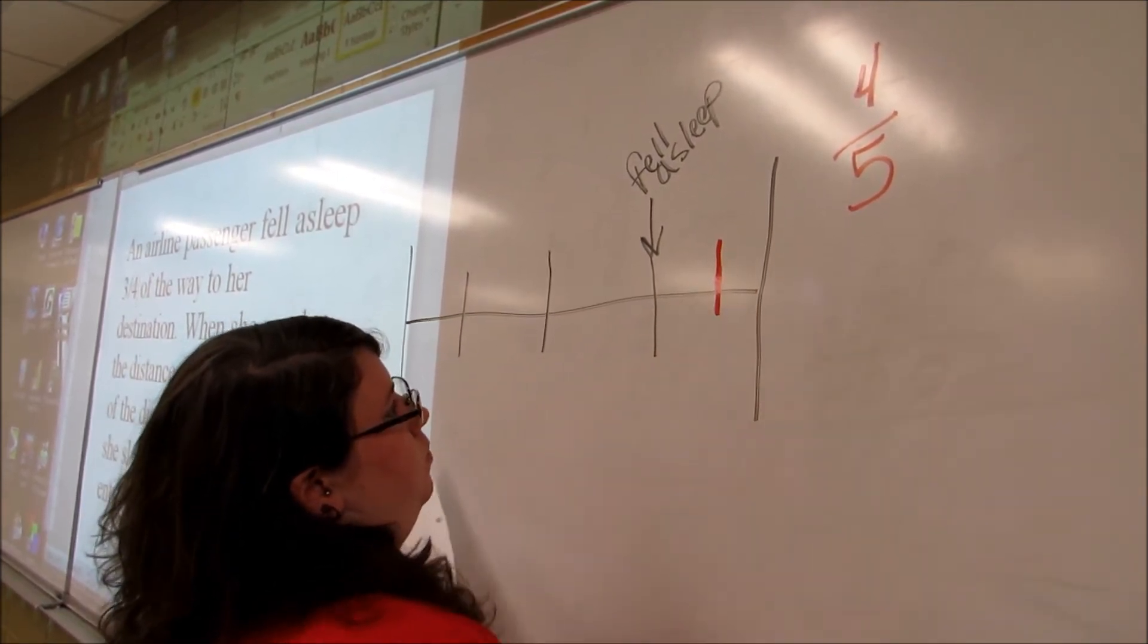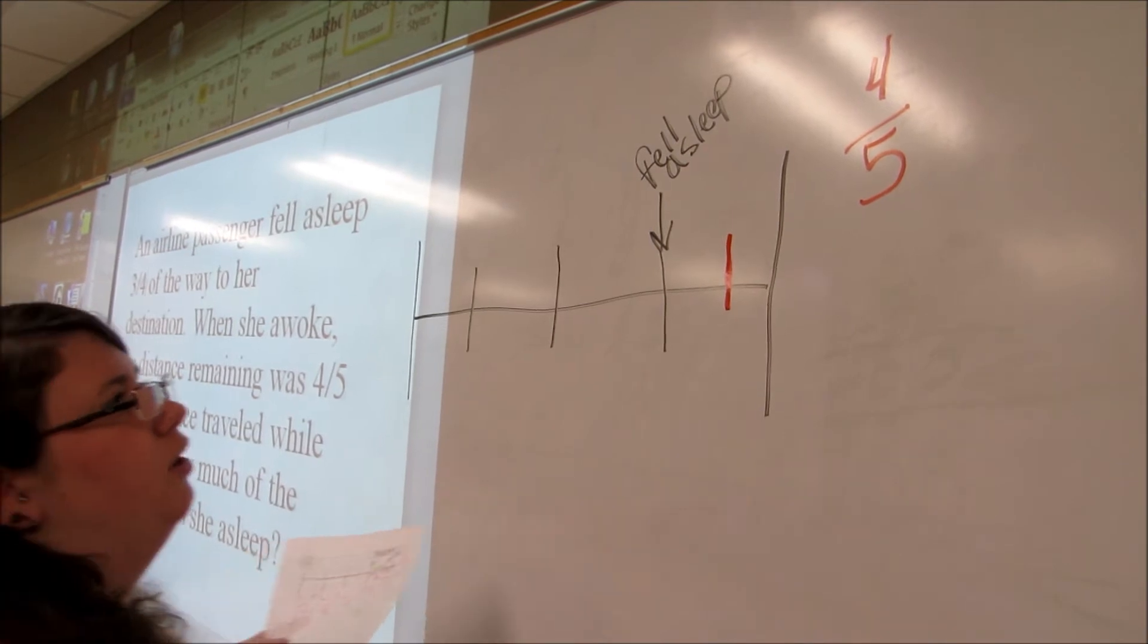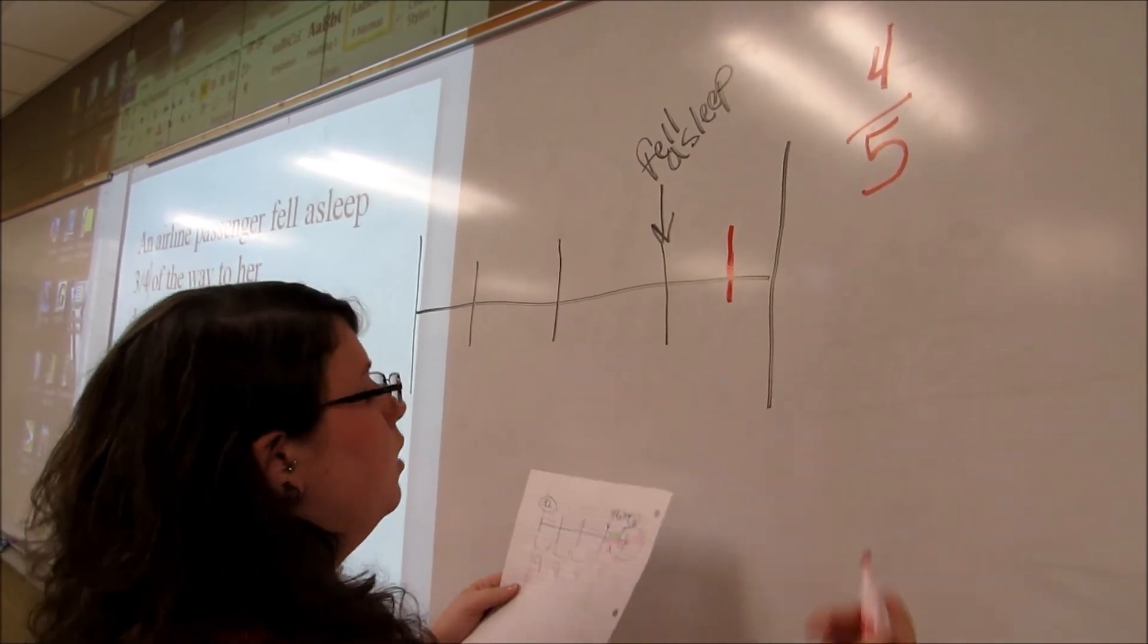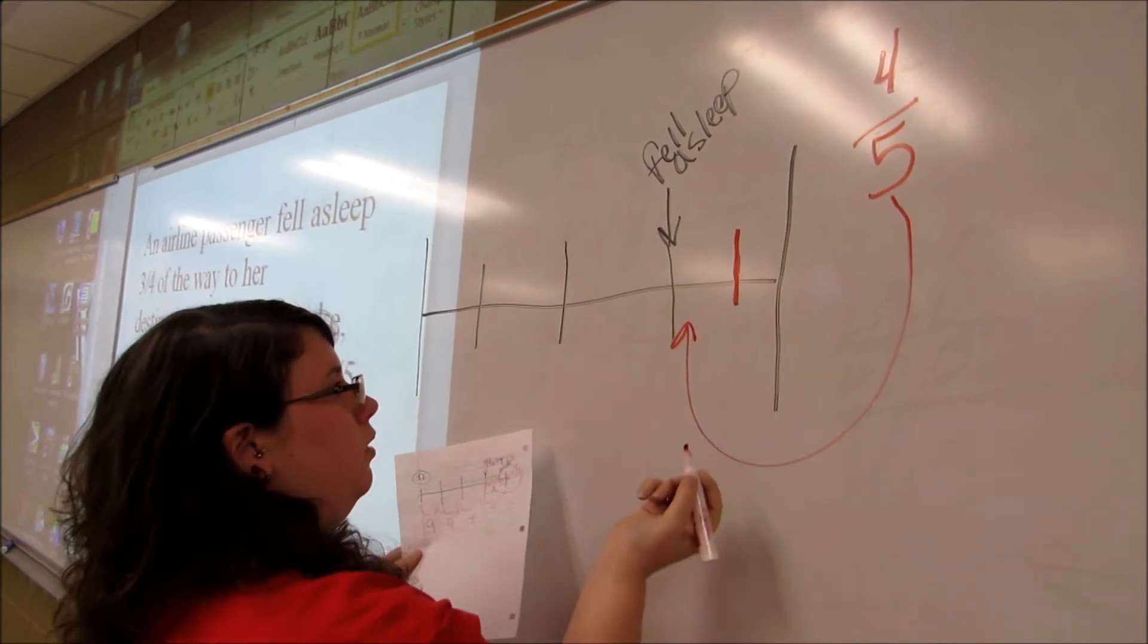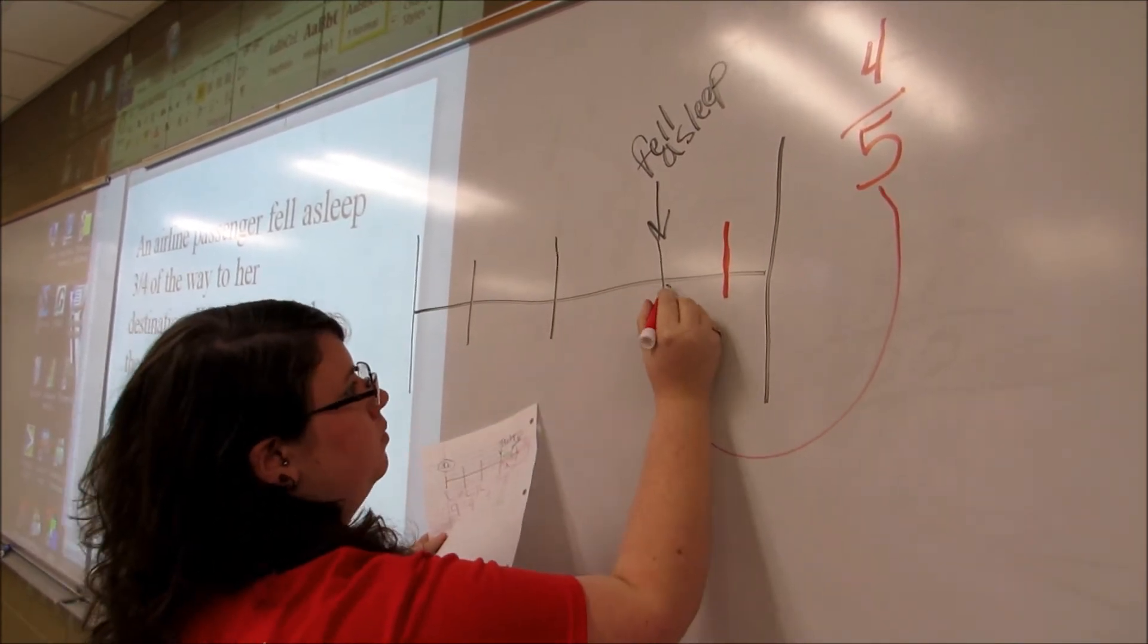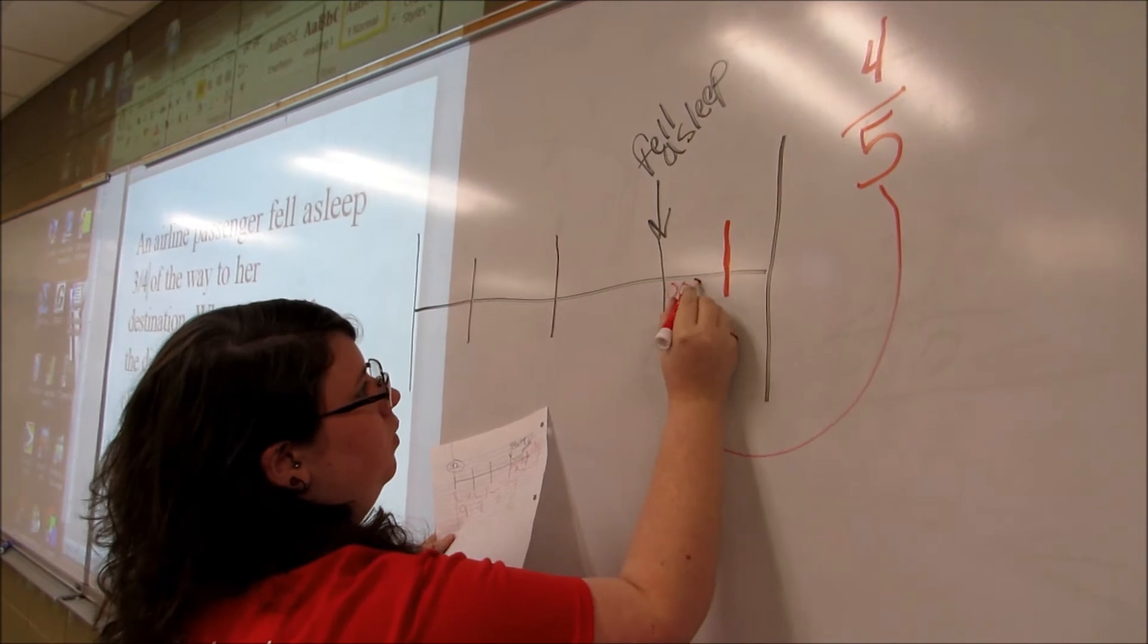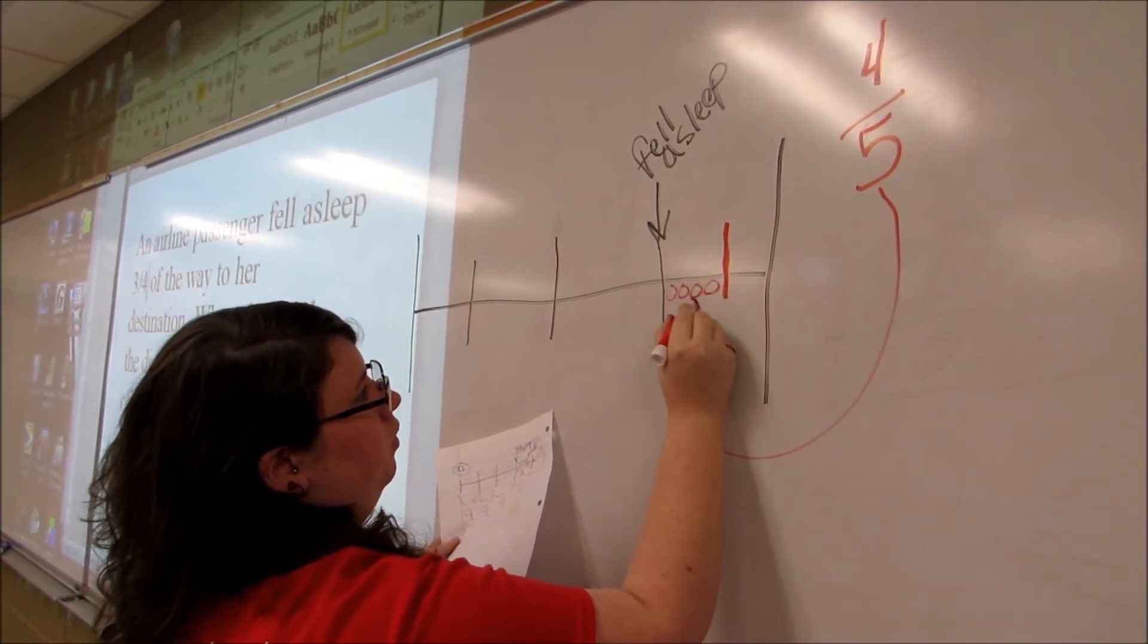Where you put the line really doesn't matter, what matters is if you get the numbers in the right place. So we're going to take that five and we're going to put the five right there. So it's going to be five parts: one, two, three, four, five.